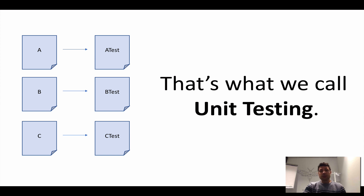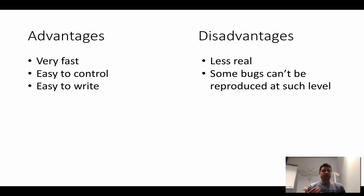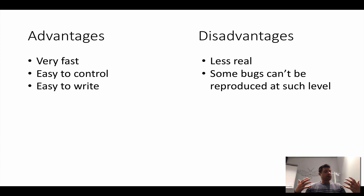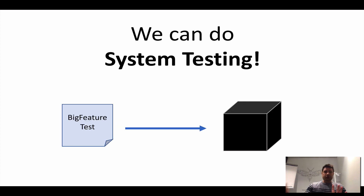This is what we call unit testing. We've been discussing unit testing, which is testing one unit — one function. If you focus on testing these small units of your software you have advantages: unit tests are very fast, easy to control because you can simulate things, and easy to write. The disadvantage is that they are less realistic — some bugs cannot be reproduced at the unit level and only happen when lots of things are connected together.